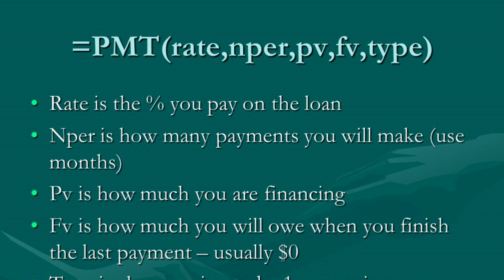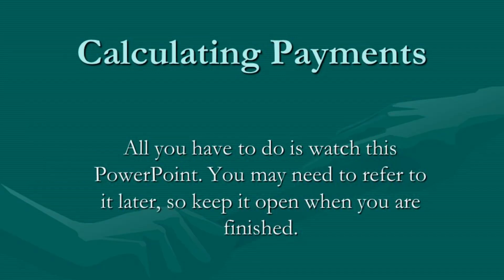The PMT formula requires three inputs: the interest rate, the number of periods, and the present value of the loan or investment. The interest rate is the rate at which the loan or investment grows or earns interest, expressed as a percentage per period, typically per year. The present value is the current value of the loan or investment, representing the amount of money borrowed or invested at the beginning of the period.